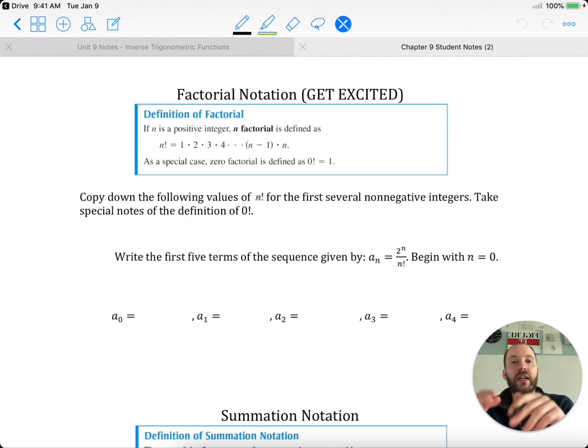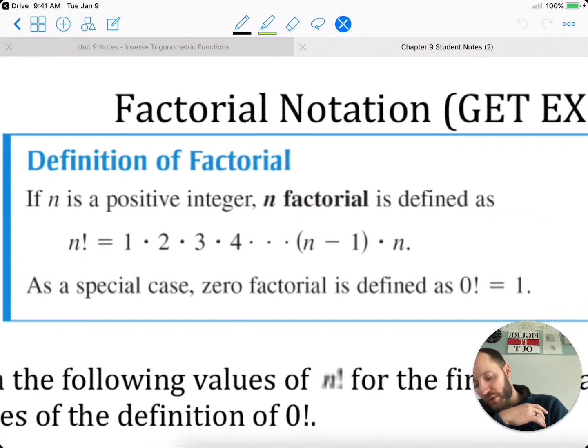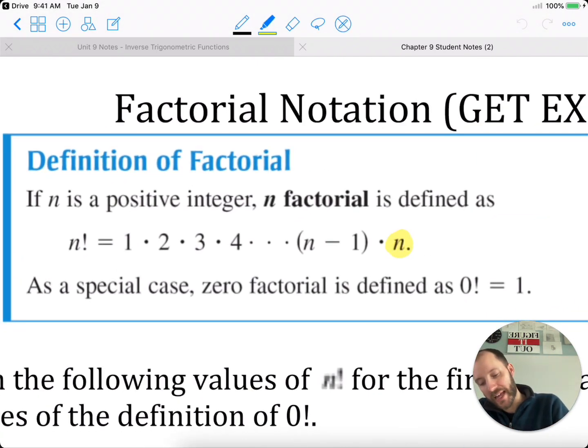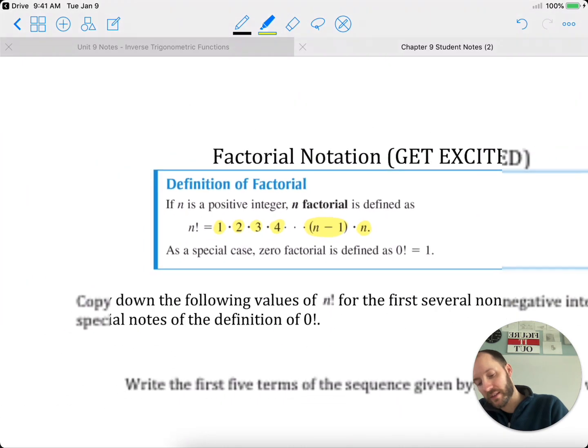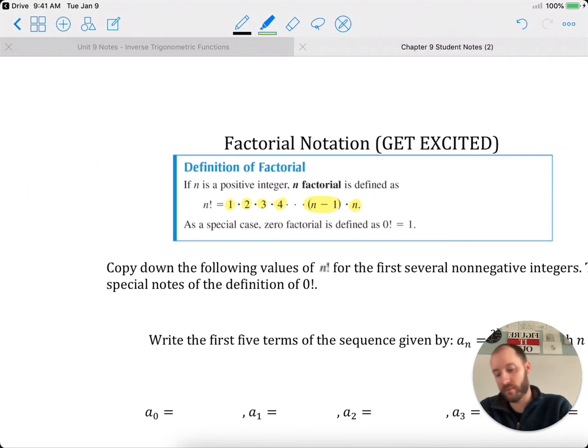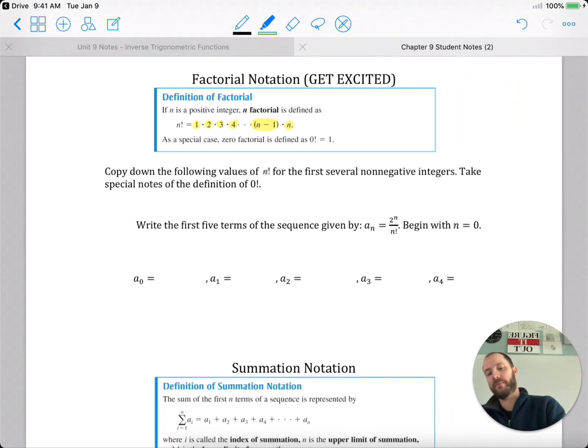Factorial notation, so the exclamation mark. N factorial is you take every integer before that factorial and the integer it is, multiply them together. If you want n factorial, you need n, n minus 1, the number before it, all the way down to 1, you want to put them all together. And then there's a special case of 0 factorial. 0 factorial is defined as equal to 1.